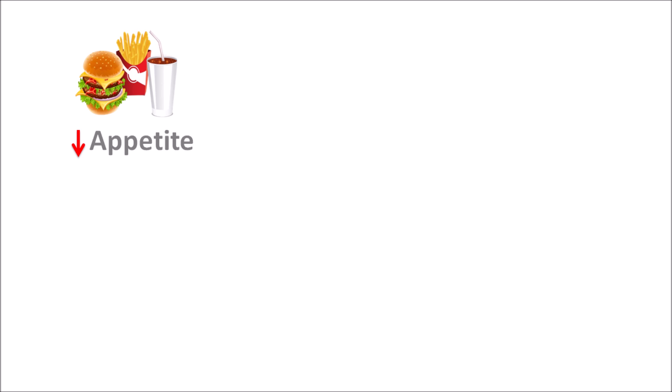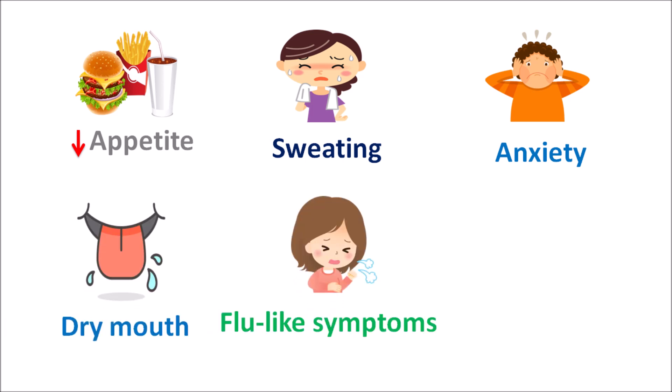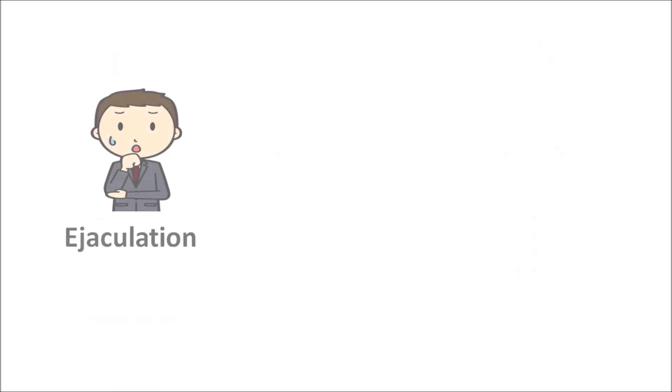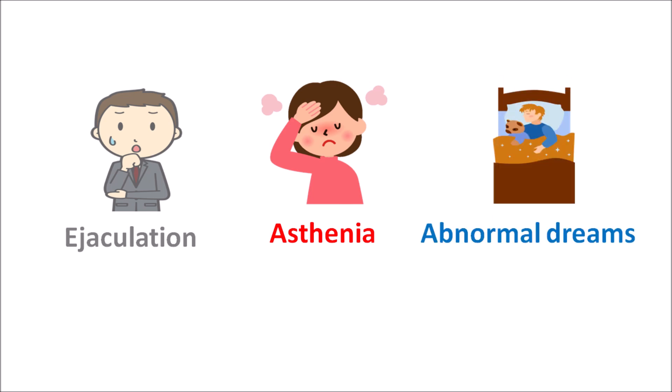Regarding side effects: serotonin can reduce appetite, so loss of appetite is one of the important side effects of fluoxetine. It can also increase sweating and anxiety during early treatment. Anticholinergic side effects such as dry mouth and flu-like symptoms resulting in sinusitis and rhinitis can also occur. Additional side effects include insomnia, abnormal ejaculation leading to sexual dysfunction, asthenia, and abnormal or illogical dreams.